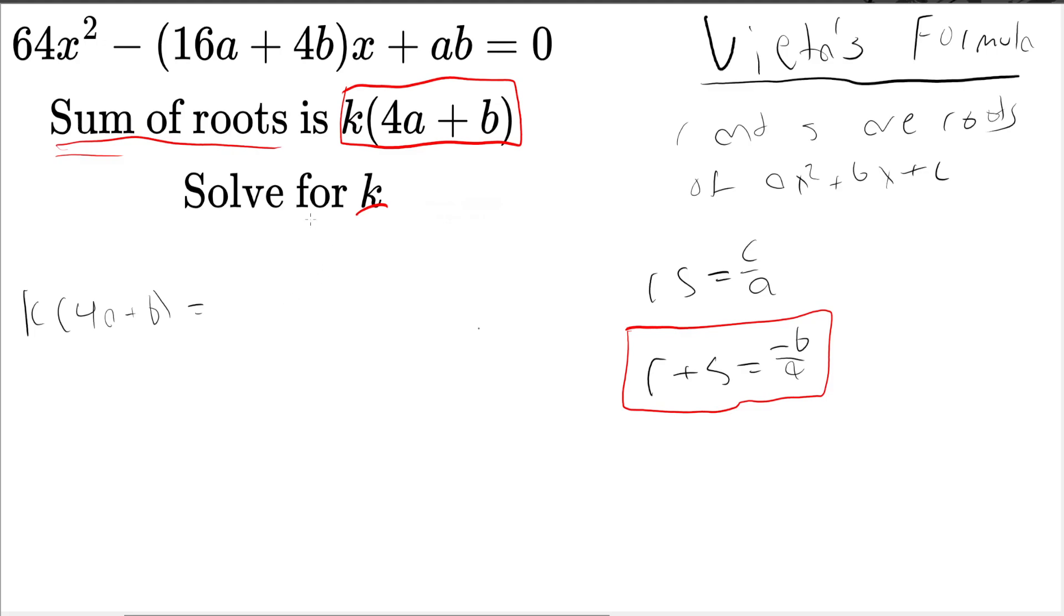We're looking for -b. The negative here and the negative there are going to cancel. So we're left with 16a + 4b. And our quadratic coefficient is 64, as we can see here.